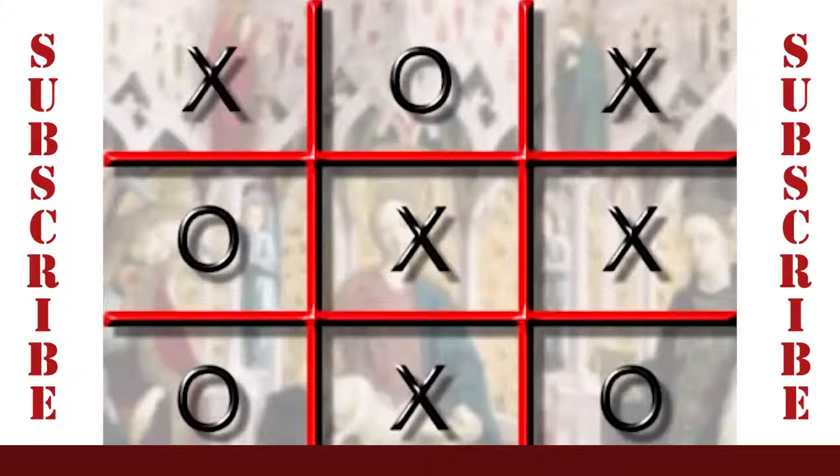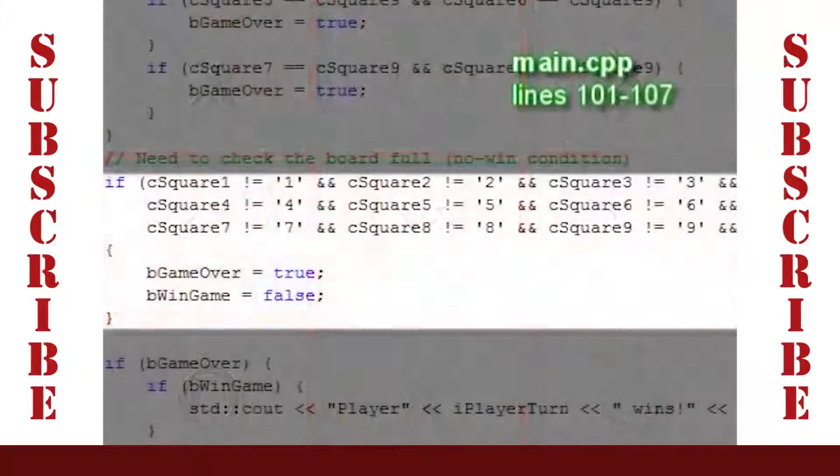Those cases cover the win conditions. However, games often end in a draw like this. This final check takes care of the case of a draw and checks whether all the squares have been marked.